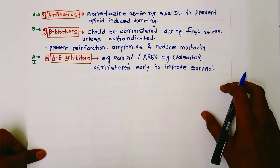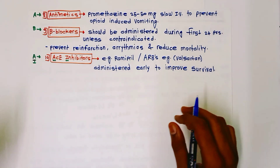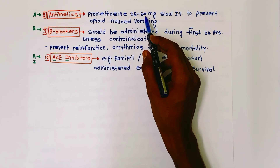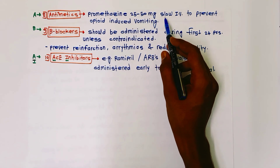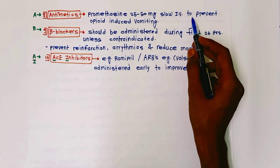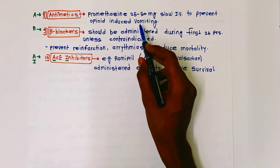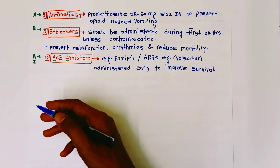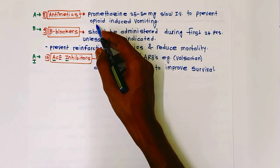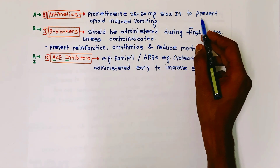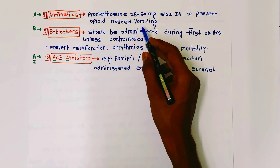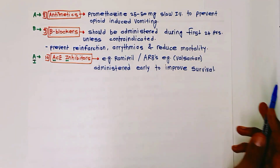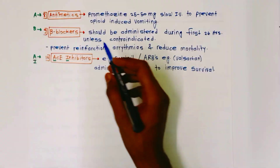A for antiemetics: promethazine 25 to 50 mg is given slowly intravenously to prevent opioid-induced vomiting. Opioid here refers to the morphine that has been given, and promethazine is used to prevent the vomiting it can cause.